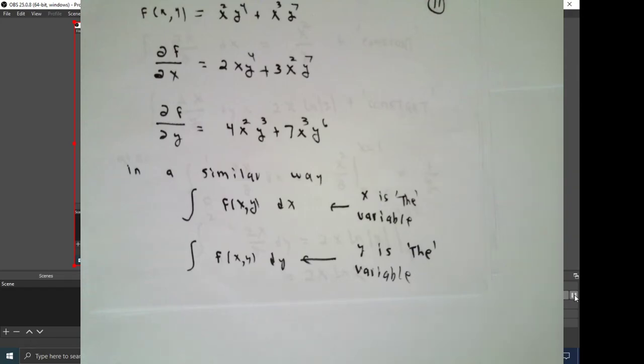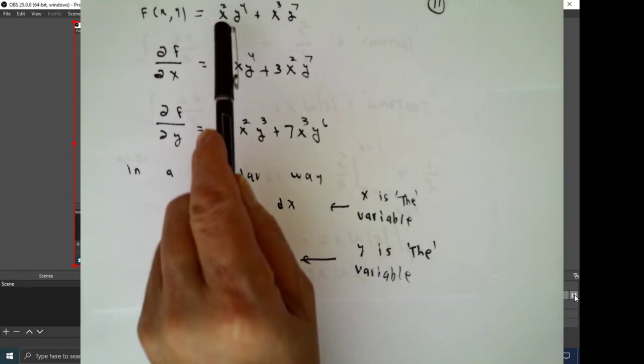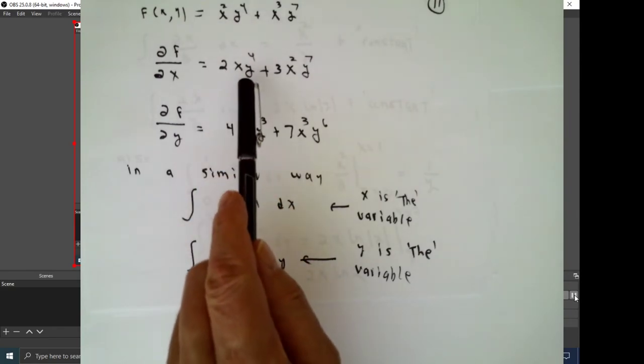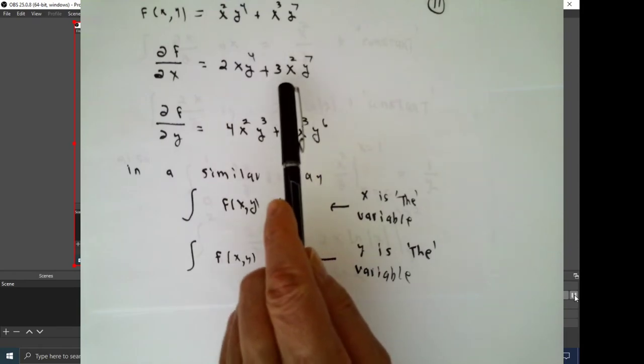If we can keep the context correct, then we can easily calculate these partial derivatives using the techniques we learned in elementary calculus. Following that idea, the partial derivative of f with respect to x, x is the variable, so the derivative of x squared is 2x, y to the fourth is a constant factor. The derivative of x cubed is 3x squared, the y to the seventh power is a constant factor.